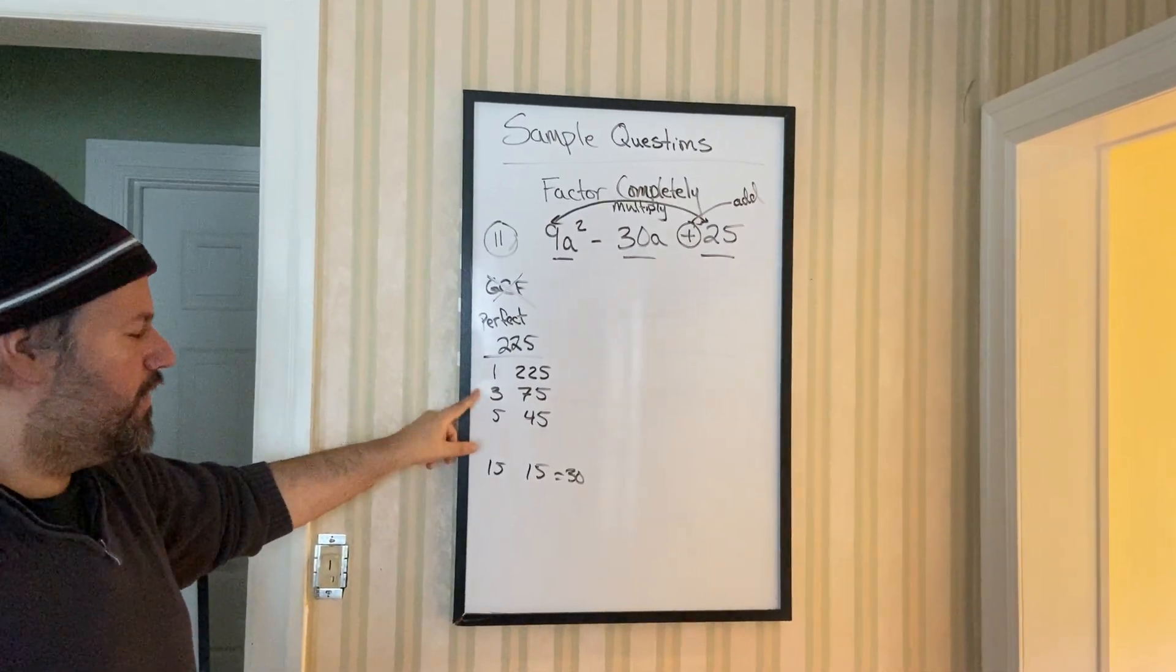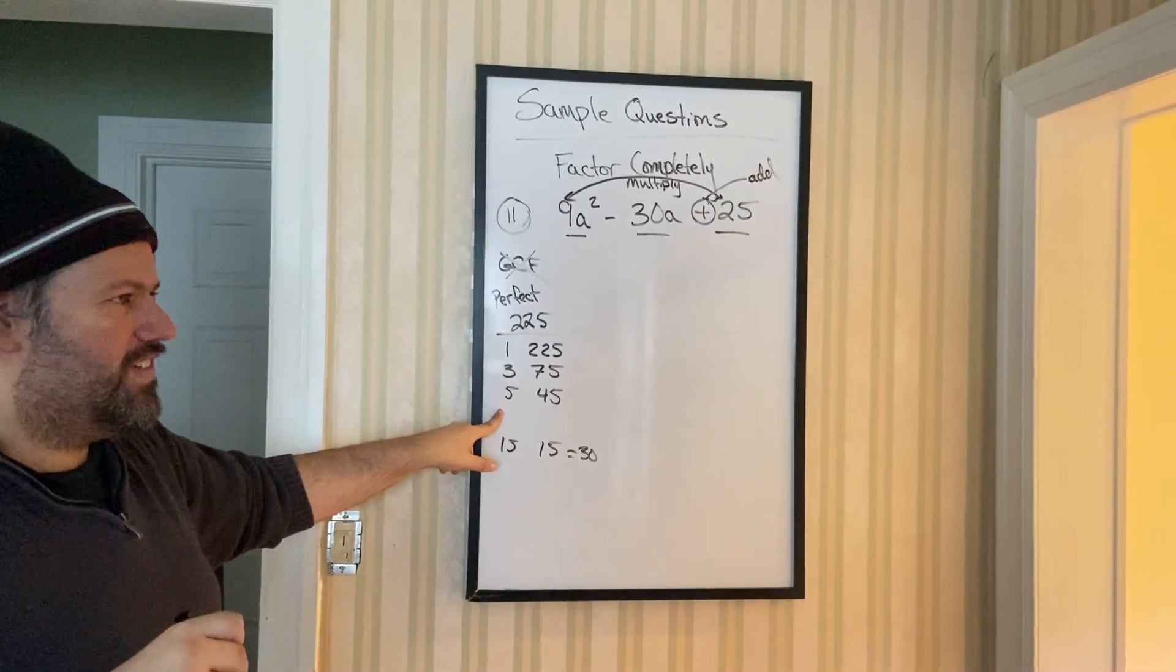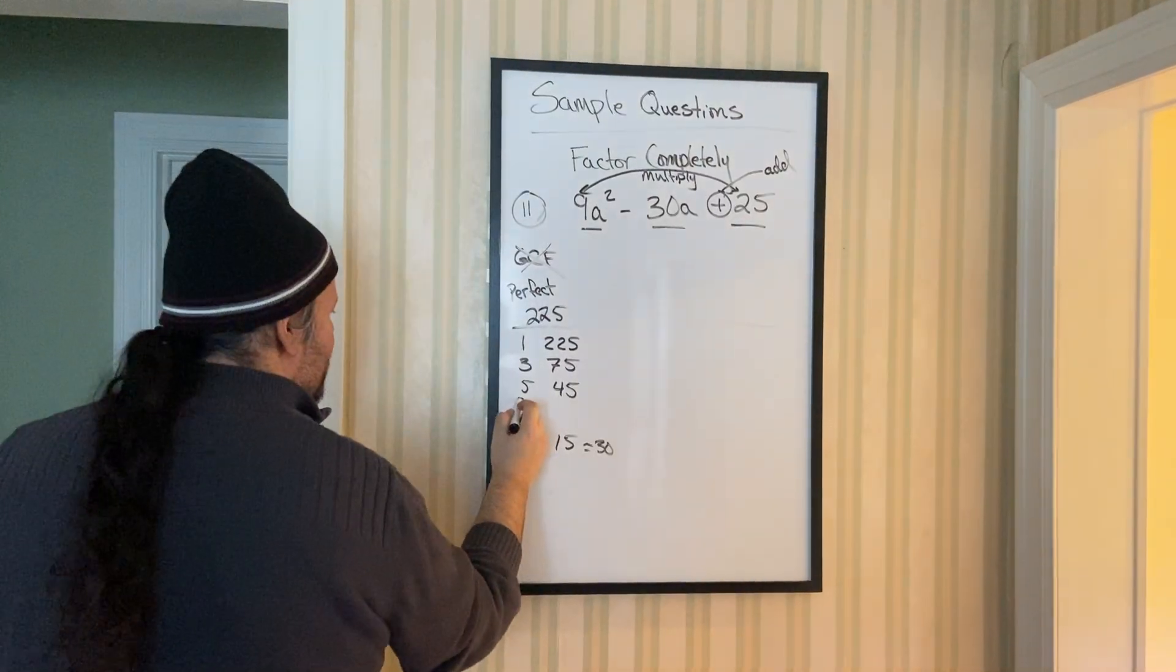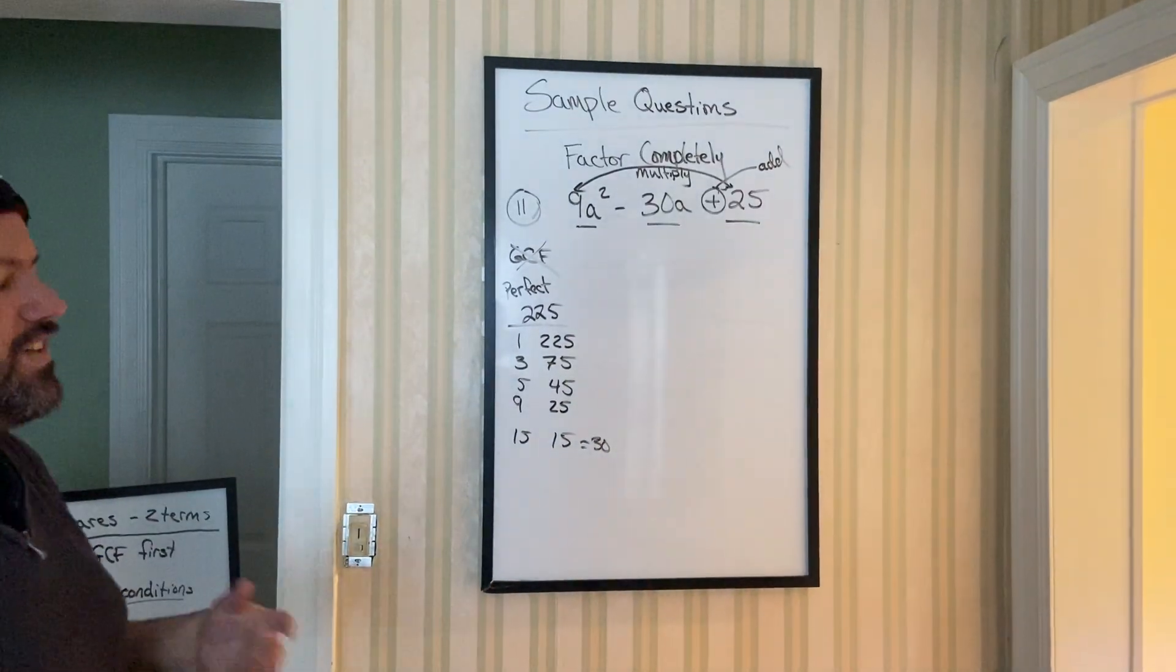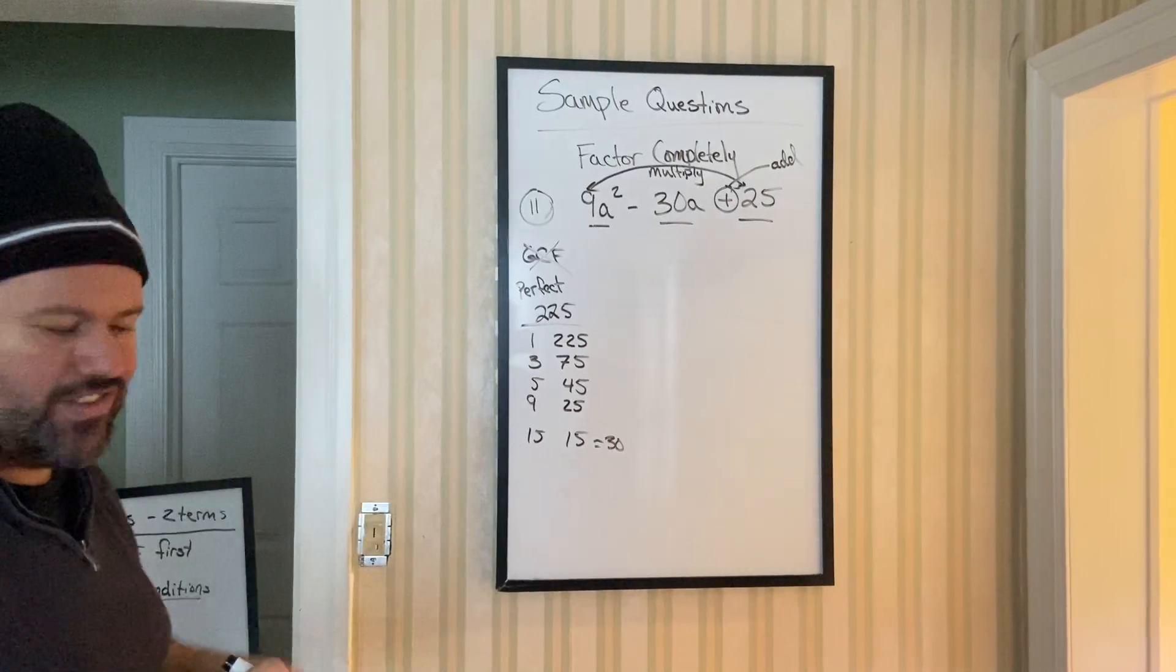So if you want to go through the list. 1, 2, 3, 4, 5. After 5, 6. 6 doesn't work. 7 doesn't work. 8 doesn't work. 9 works, because we just did it. 9 times 25. 10 won't work. 11 won't work. 12 won't work. 13, 14, and 15. And then you could just do your traditional.